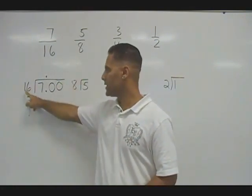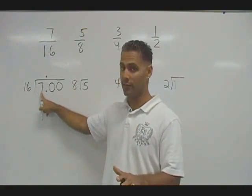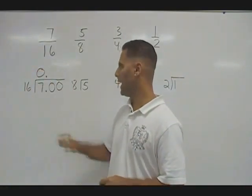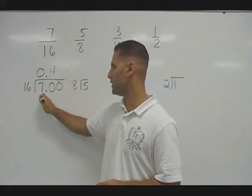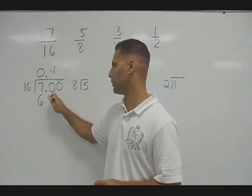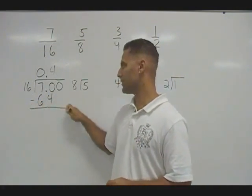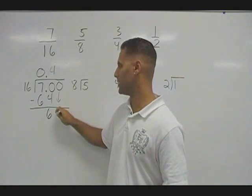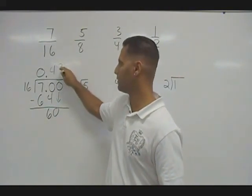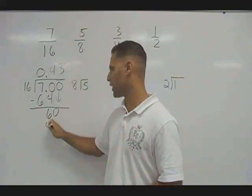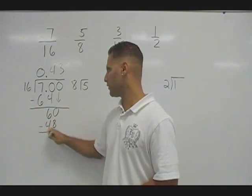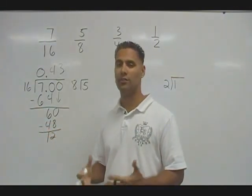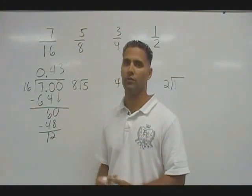So let's fit sixteen into seven — which actually can't fit at all — so we put a zero for that place. We can fit four groups of sixteen inside seventy, giving us sixty-four. The difference of seventy and sixty-four is six, so now we drop the zero down. We can fit three groups of sixteen into sixty, which is forty-eight, leaving twelve left over. We can continue the division, but it's unnecessary just for comparison purposes.